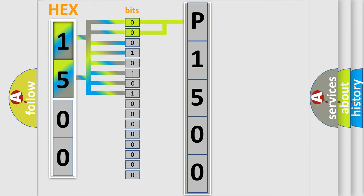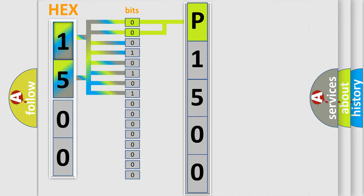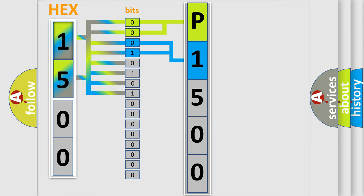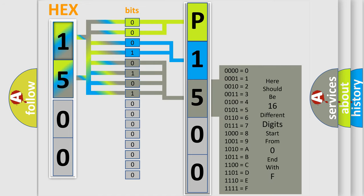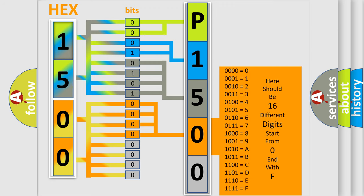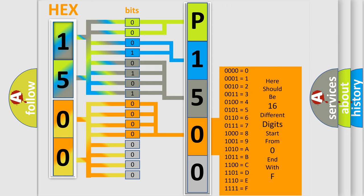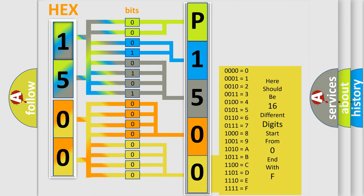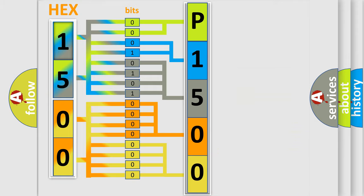By combining the first two bits, the basic character of the error code is expressed. The next two bits determine the second character. The last four bits of the first byte define the third character of the code. The second byte is composed of a combination of eight bits: the first four bits determine the fourth character, and the last four bits define the fifth character. A single byte conceals 256 possible combinations. This is how the diagnostic tool translates the received information into a more comprehensible format.